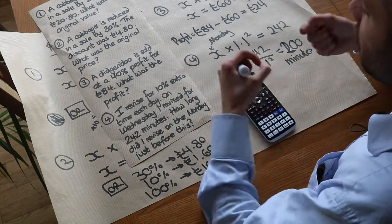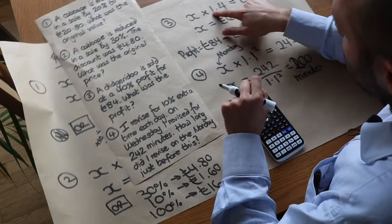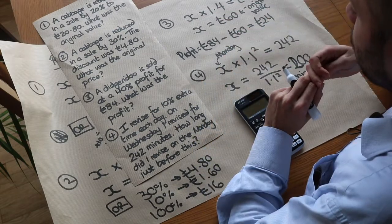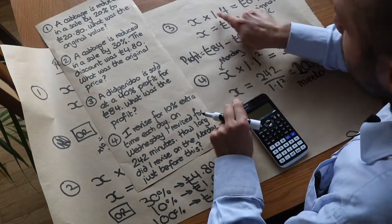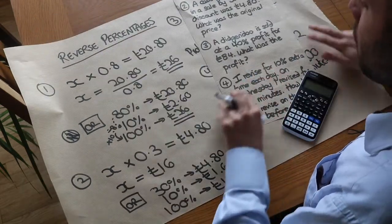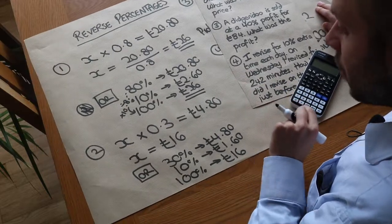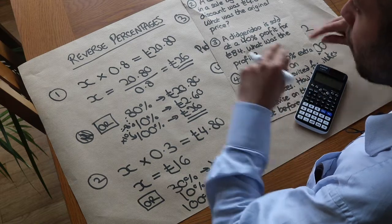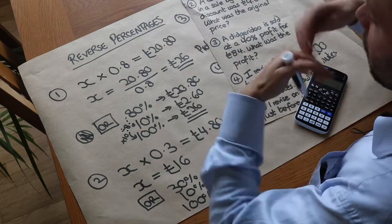So just to summarise, if you're using a method of decimal multipliers, when you want to find a value after a percentage increase or percentage decrease, you multiply by something. But if you want to find the value before the percentage change, then you divide by the decimal multiplier. Forwards you times, going backwards you divide.